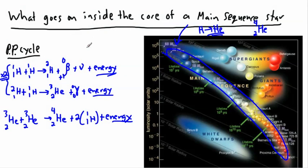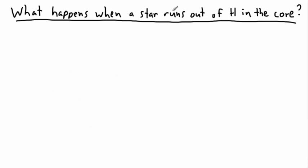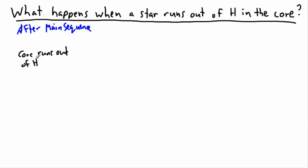We've been talking about what goes on inside the core of a happy main sequence star like our Sun — converting hydrogen to helium. Now we're going to talk about what happens after the main sequence, when the star runs out of hydrogen. The core runs out of hydrogen.